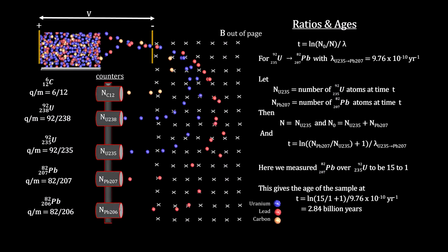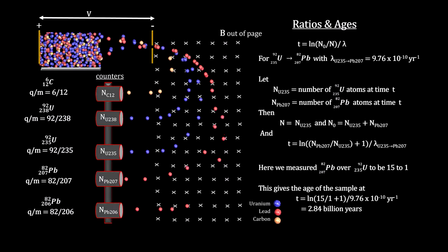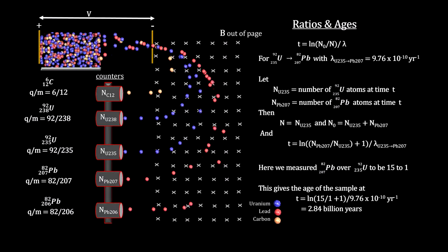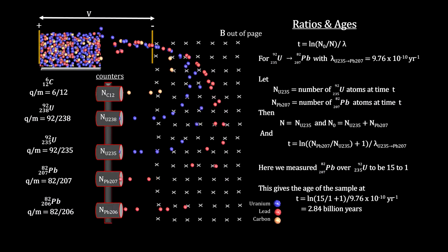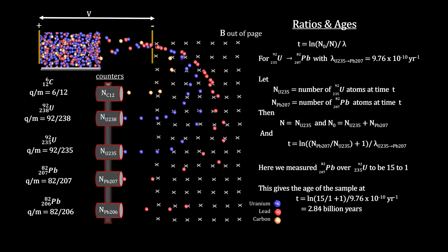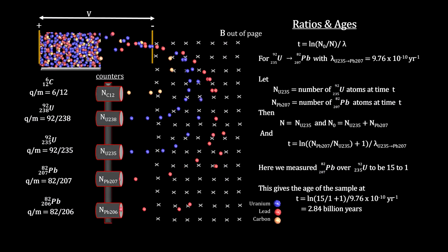In our illustration, the counts for uranium-235 and lead-207 came out at 15 to 1 lead over uranium. This produces an age calculation of 2.84 billion years.